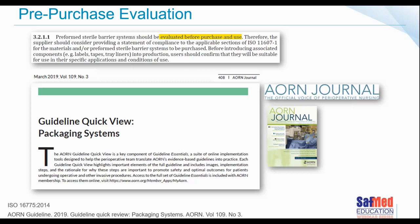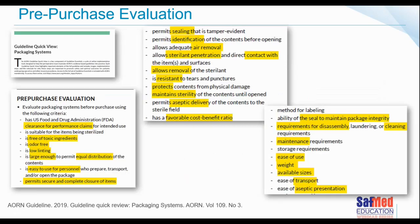As you may recall from our previous lectures, ISO 16775 states that we need to perform a pre-purchasing evaluation to understand the product we are going to use. I came across a really nice article in the AORN Journal from 2019 discussing the American guideline from the Association of Operating Room Nurses on packaging systems. It also discusses the need for a pre-purchase evaluation, and it's good to see that the American standards are in line with the ISO standard — all aiming at best practice.